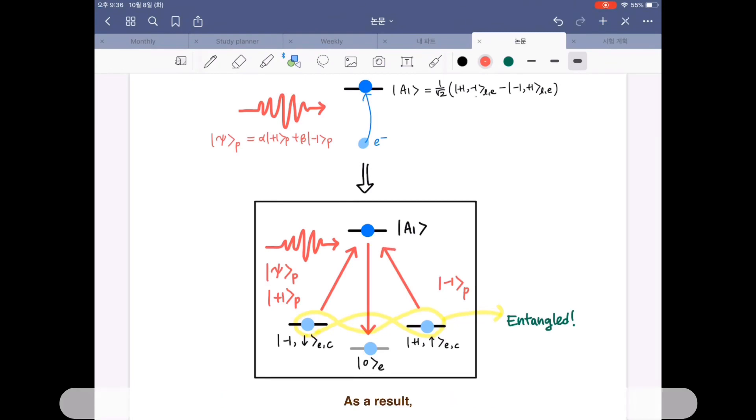As a result, photon absorption allows indirect observation of carbon nuclear spin states through the bell state measurements of the state of electron and carbon nuclear spin.